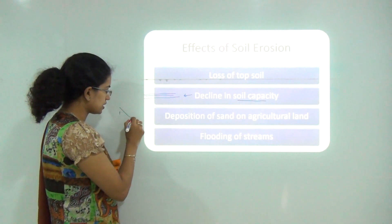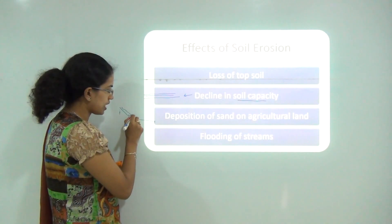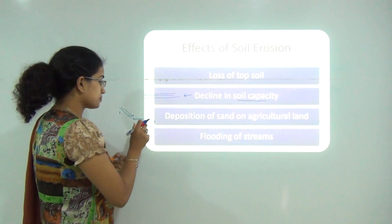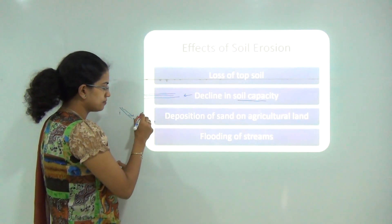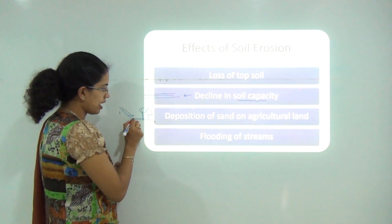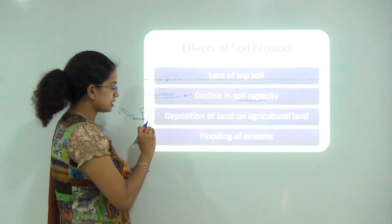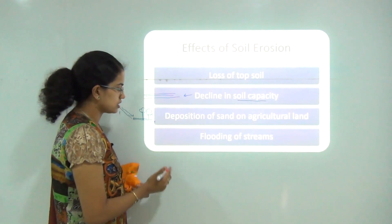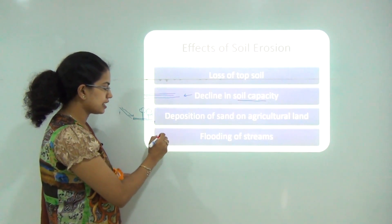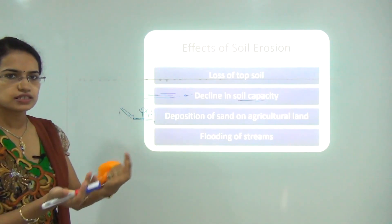If soil erosion is taking place on a slope and there is a patch of agricultural land below, the sand coming from the eroded area deposits on the agricultural land, decreasing the capacity of that land for cultivation — because a layer of sand is deposited on top of the agricultural layer. Finally, flooding of streams also occurs: if there is overflow of water in streams, it affects nearby areas, causing soil erosion in the vicinity of the river basin.